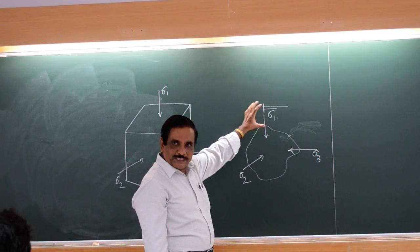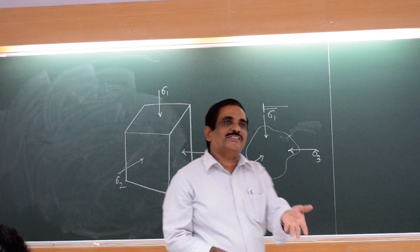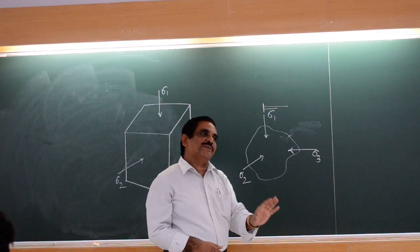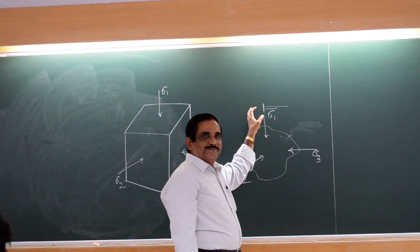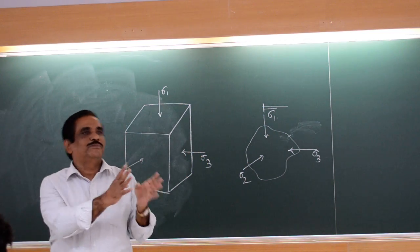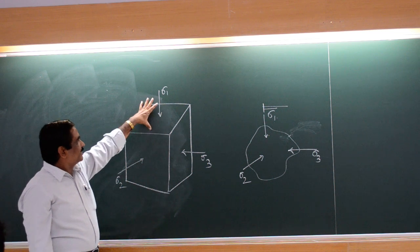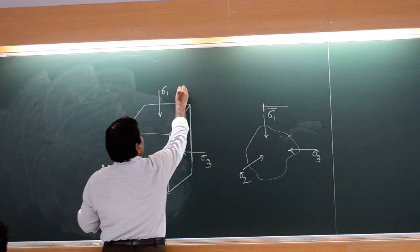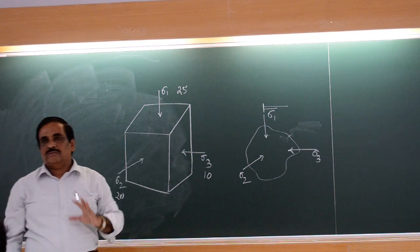Sigma 1 will be the maximum one. The other two will either be equal, or one may be a little greater than the other. If one is a little greater than the other, sigma 2 is the intermediate one and the least one is sigma 3. This is the concept of principal stress. You can allot numbers — suppose this is 20 MPa, this may be 20 MPa, this may be 10 MPa, or something like that.